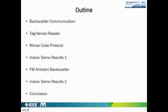Let's start. What do we have in this work? First, we use backscatter communication as a technique to communicate with our sensor — the same philosophy as RFID tags. We will see our tag and sensor connected to the reader. We also use a Morse code protocol to communicate with our tag and have some indoor demo results. In the second part, we will see how we can communicate using ambient FM signals from music stations, along with indoor demo results.